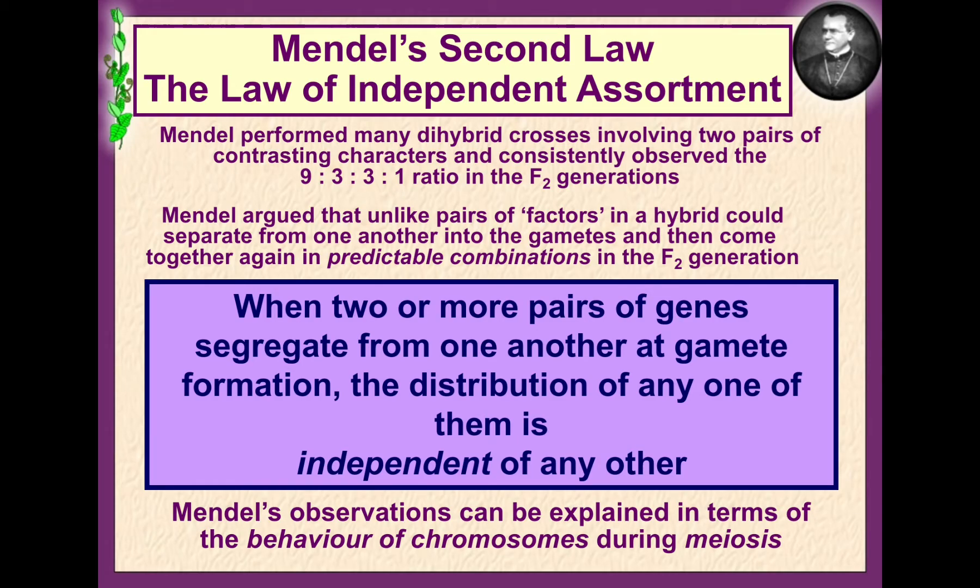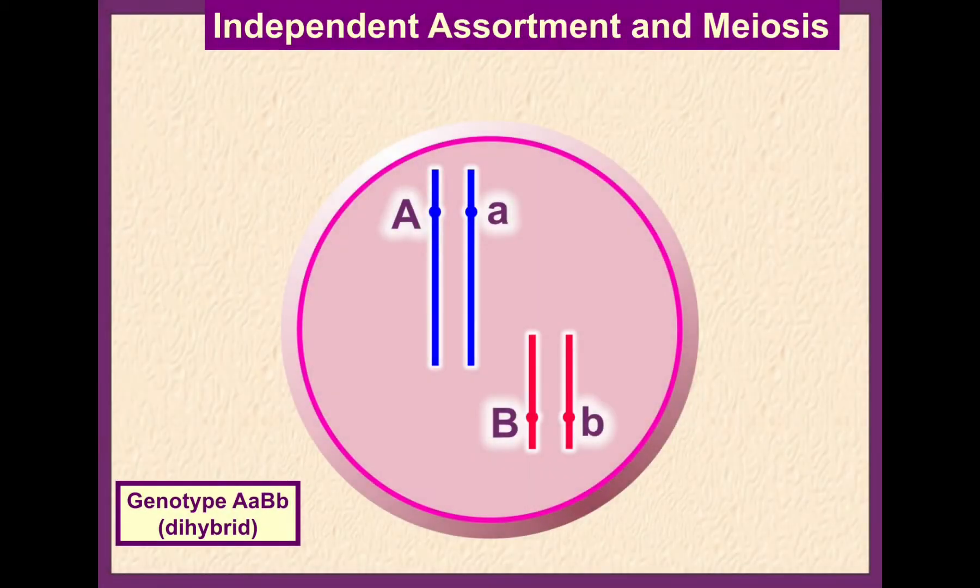Here we have a cell and we're looking at two genes: gene A and gene B. A few things to note: first of all, A has a dominant and recessive form. Likewise for B, dominant and recessive. Second thing to note is that they are on different chromosomes.